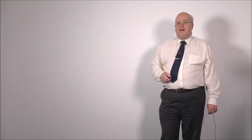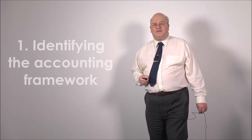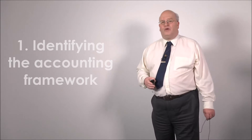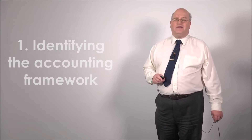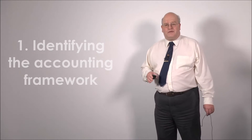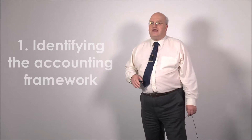Let me start off with the first key change, which is identifying the accounting framework under which you are going to be reporting. If we talk about 2015 for a moment — for accounting periods beginning on or after the 1st of January 2015 — then if you're a micro entity you'll be using the micro entity rules in the FRIZI 2015. If you're a small company you'll be using the full version of the FRIZI 2015, and if you're a medium or large company, then you'll be applying the full version of FRS 102.